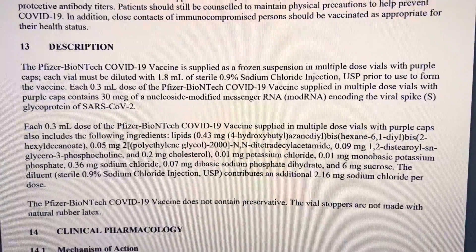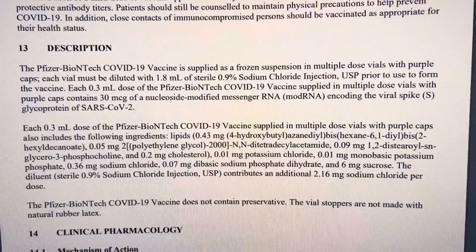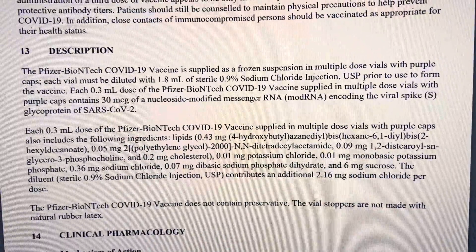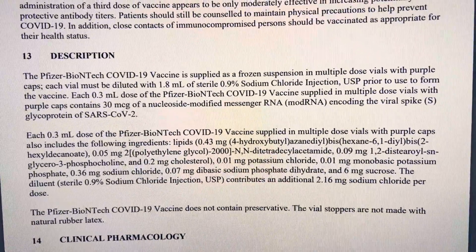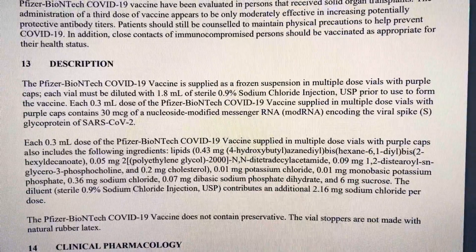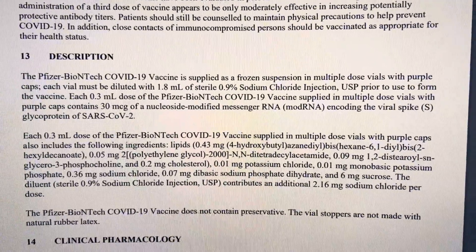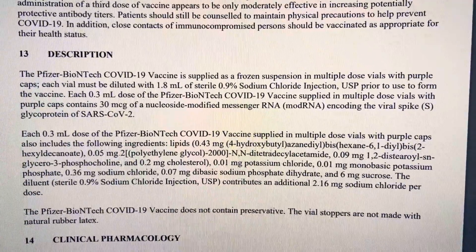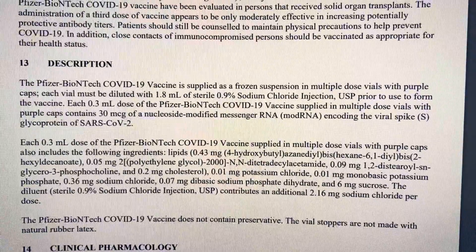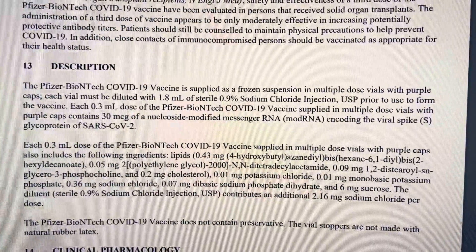The Pfizer-BioNTech COVID-19 vaccine does not contain a preservative. The vial stoppers are not made with natural rubber latex. And did it contain graphene oxide? No. No graphene oxide. So we are completely clear about this.